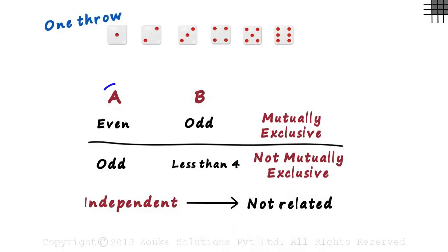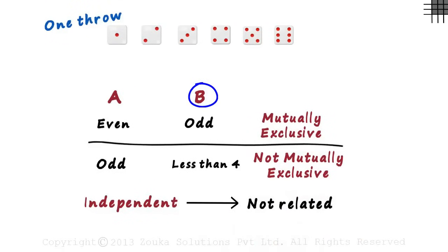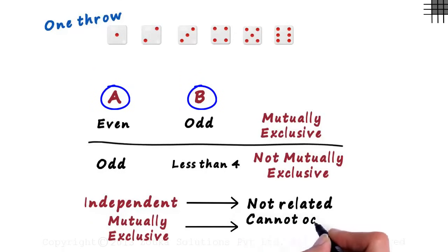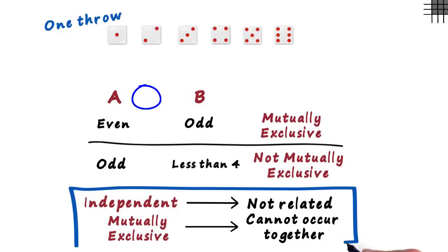That is, the outcome of one does not affect the other. They are totally unrelated. And two events are mutually exclusive if they cannot occur together. If one event occurs, the other just cannot occur.